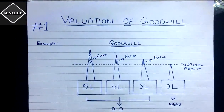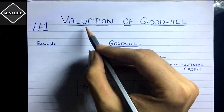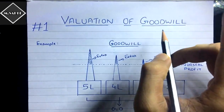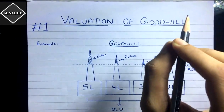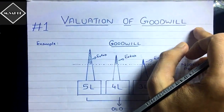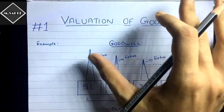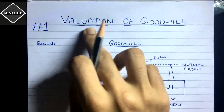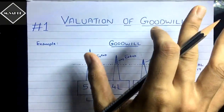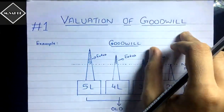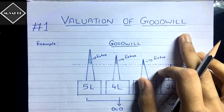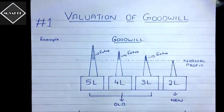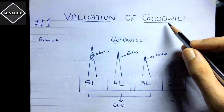Hi everyone. In this video we are going to start a new chapter called Valuation of Goodwill. This chapter is from corporate accounts and it's a very simple chapter because here you don't have to debit or credit anything, you don't have to prepare any account. You just have to do the valuation — some calculations and working notes. Let's start and see the methods and concepts in proper detail.